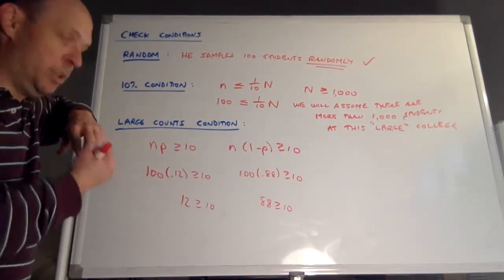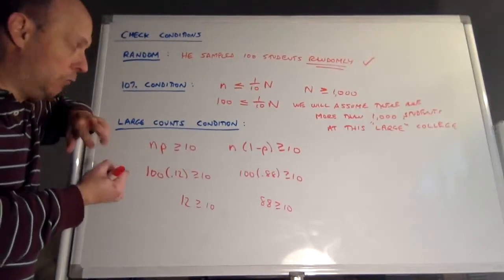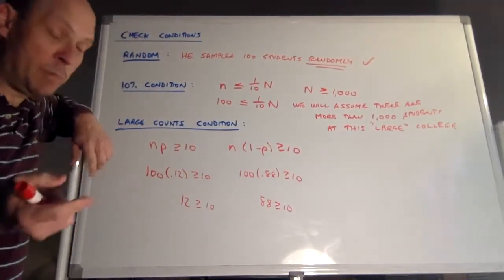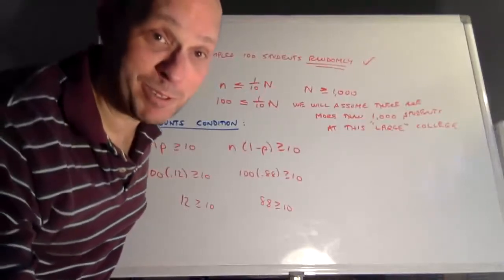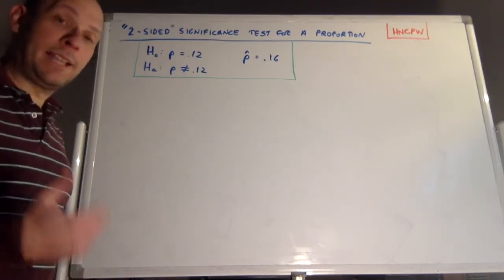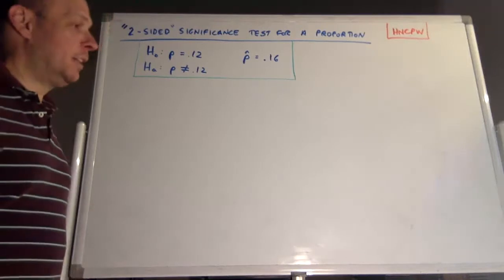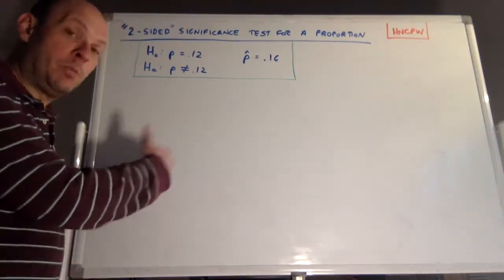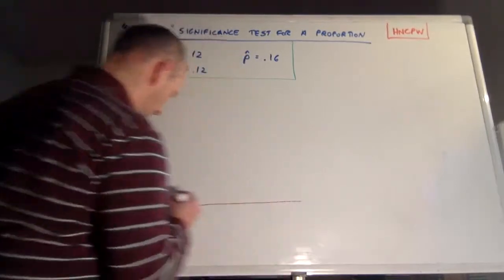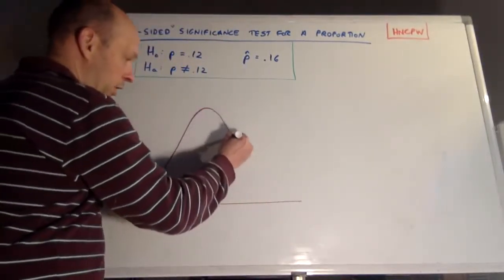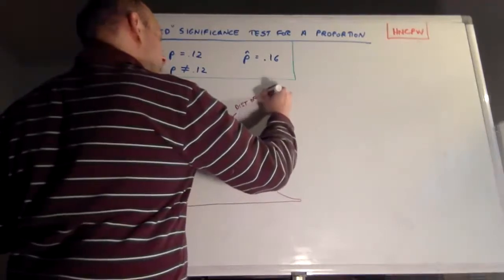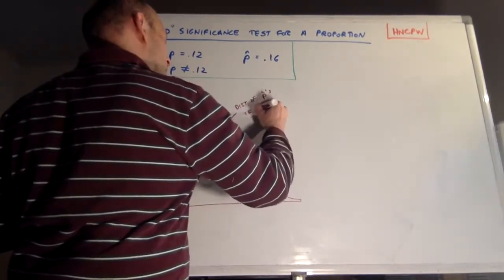We've done the hypotheses with the significance level and parameter definition, checked our conditions, and named the test. Coming up, we're going to find that P-value and write our conclusion. Now we're in position to find the P-value. In order to do so, we need that sampling distribution of P-hats. Because the large counts condition was satisfied, we can use a normal model. Let's draw in that normal curve.